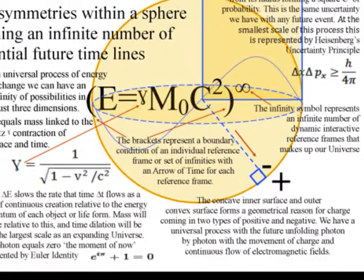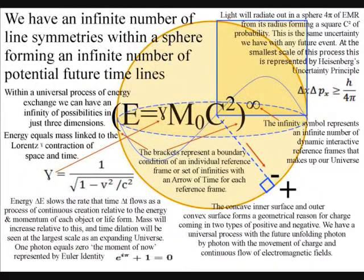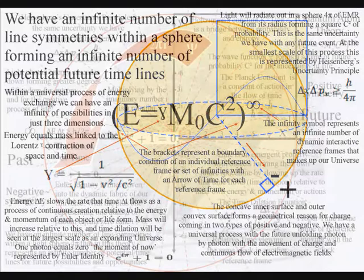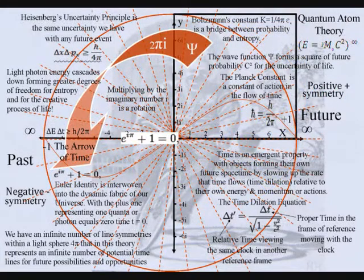We have an infinite number of line symmetries within a light sphere that in this theory represents an infinite number of possible timelines for future possibilities and opportunities.